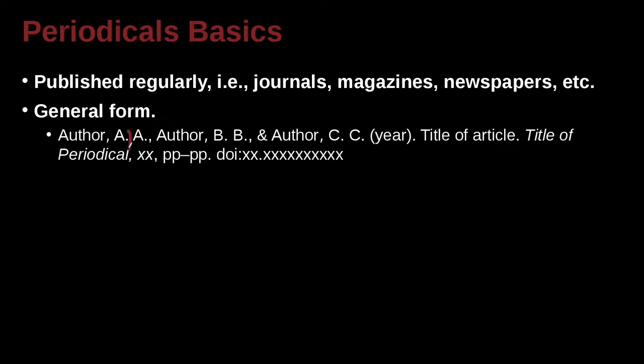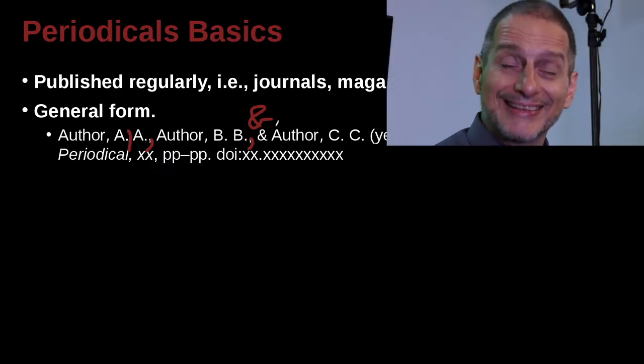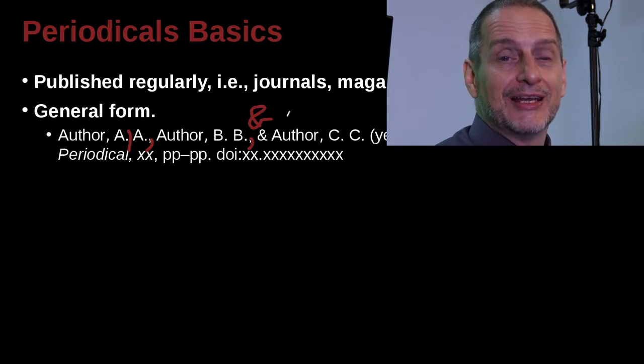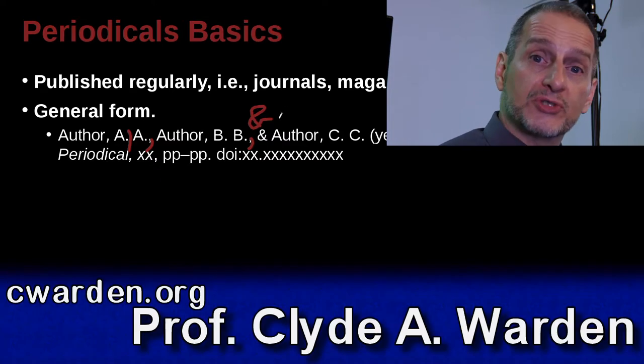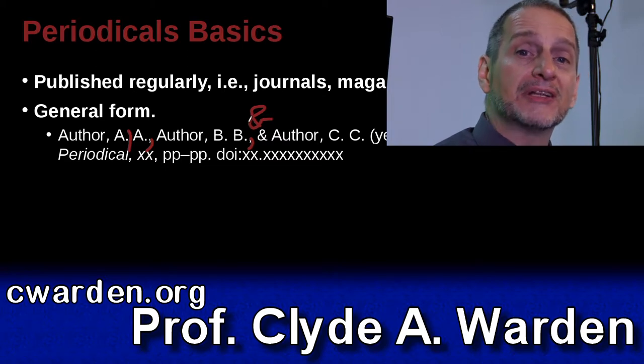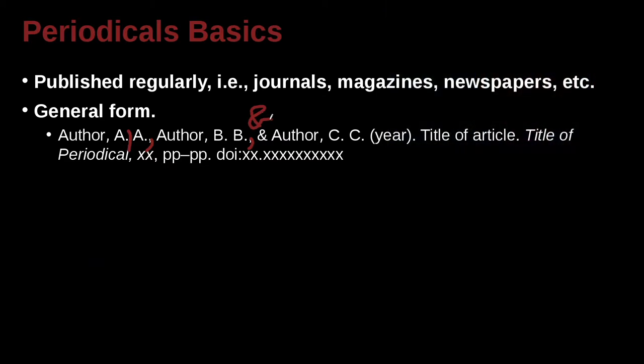Note there's a space there. So first name period, space, middle name period, space, and then we have a comma and then the next author. After that author, comma, and then the next author. Before the last author, if there's more than one, then you're going to have the ampersand. Remember, the ampersand simply means and, A-N-D. It's a little bit complicated in the citation—sometimes you use ampersand, sometimes you use A-N-D, but here in the reference list, you always stick to the ampersand.